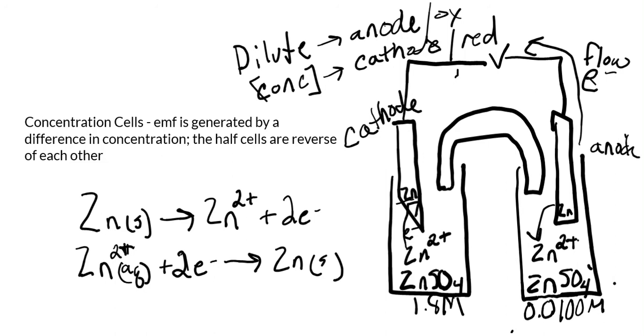If I wanted to calculate the E cell, we're going to end up using the Nernst equation. The Nernst equation, remember, is for non-standard conditions. And so since these are both at one molar, we're going to have to use the Nernst - that's going to be in the second video.